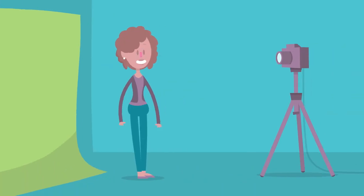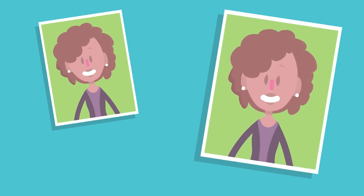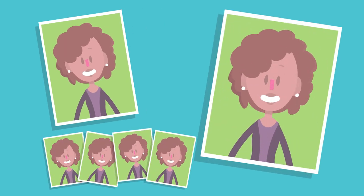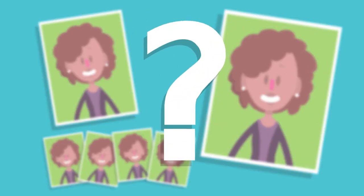It's picture day. Kate chooses the package with one photo for her parents, a larger one for her grandparents, and smaller photos for her friends. How can photographers print one photo in different sizes?